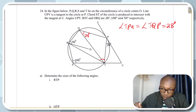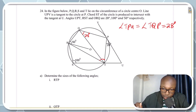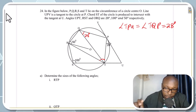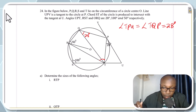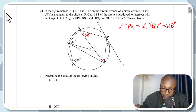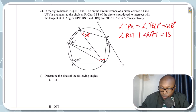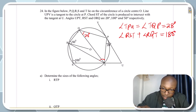After getting that, look at quadrilateral RSQT. Angles S and Q are two opposite angles in a cyclic quadrilateral, and the property is that the sum of two opposite angles in a cyclic quadrilateral is 180 degrees. Therefore, angle RST plus angle RQT should equal 180. If angle RST is 100 degrees, then angle RQT should be 180 minus 100, which gives 80 degrees.